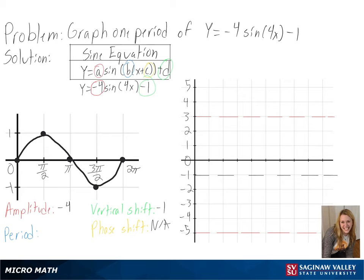Then we can solve for our period, or 2 pi over b. We can see here our b is 4, so we will get pi over 2 as our period.